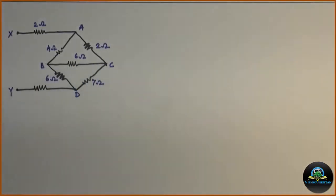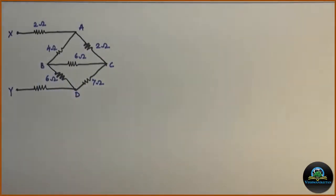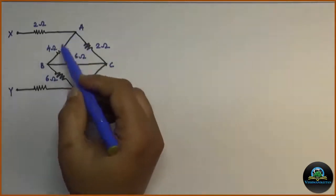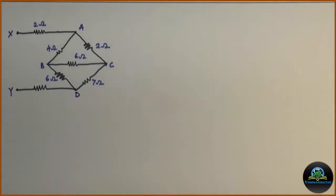To calculate equivalent resistance between terminals X and Y, we have to reduce the given circuit into a single resistance across X and Y. Therefore, we can convert delta A, B, C or delta B, C, D into its equivalent star connection which will give following modified circuit. So let us convert A, B, C delta into equivalent star.